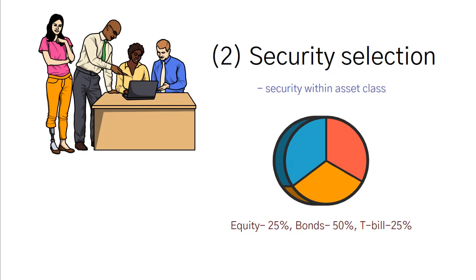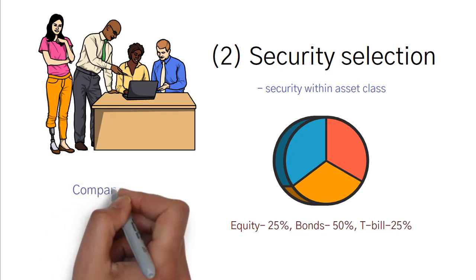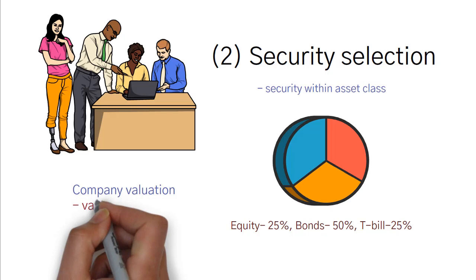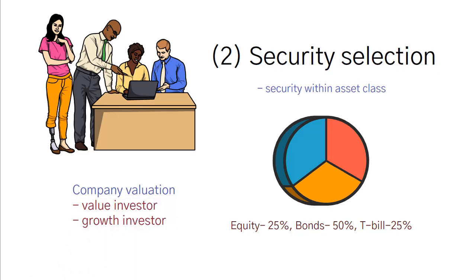For example, if you want to find a stock to invest in, you might be doing company valuation to find the undervalued stock or other types of analysis to find the growth stock. Again, it depends on whether you are a value investor or a growth investor.